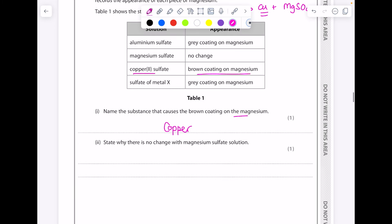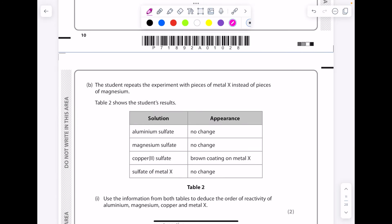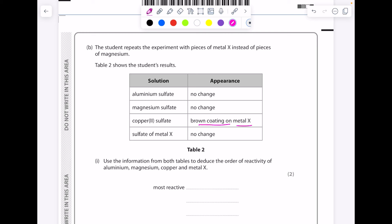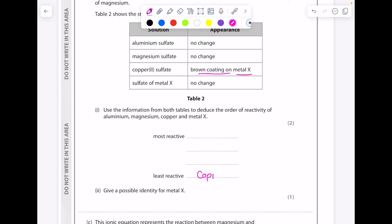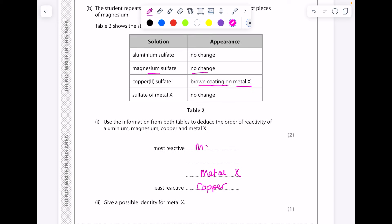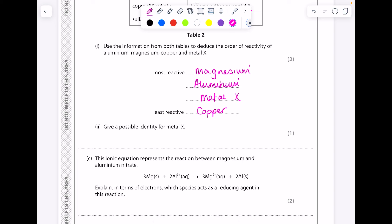State why there is no change with magnesium sulfate solution. Well, a metal cannot displace itself. The student repeats the experiment with pieces of metal X instead of pieces of magnesium. Table 2 shows the results. Use the information from both tables to deduce the order of reactivity. The fact that there's a brown coating on metal X means that it must be more reactive than copper, so I'm going to put copper at the bottom. The fact that there's no reaction with magnesium sulfate and metal X means that magnesium is more reactive than metal X. And you need to learn the reactivity series in order to know that magnesium is more reactive than aluminum. Give a possible identity for metal X. Again, you need to have learned that reactivity. So what sits between aluminum and copper? Maybe something like zinc.